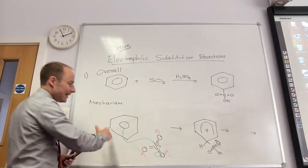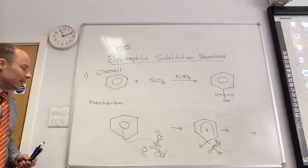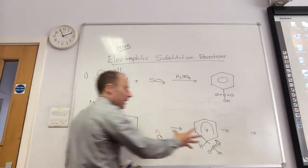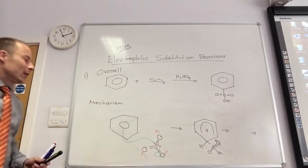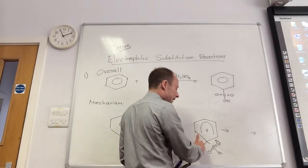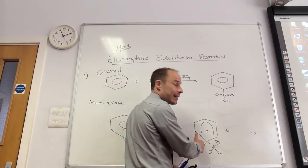So by adding these arrows on, that gives me my intermediate here. What do you reckon I need to do to this one? What's always the next step? H goes there.